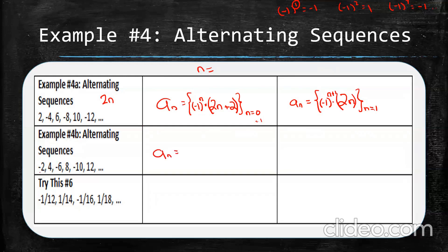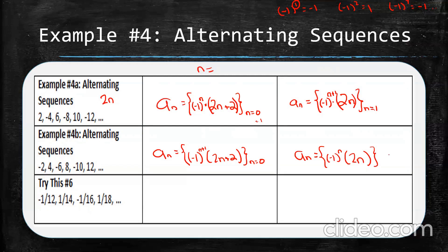For example 4b, the only difference is that you start negative instead of positive. The sequence itself is still the same even numbers, but the negative 1 power changes. For 'try this 5,' notice these are all even numbers starting at 12, so use the form 2n plus a constant on the denominator, and (-1) to some power on the numerator.